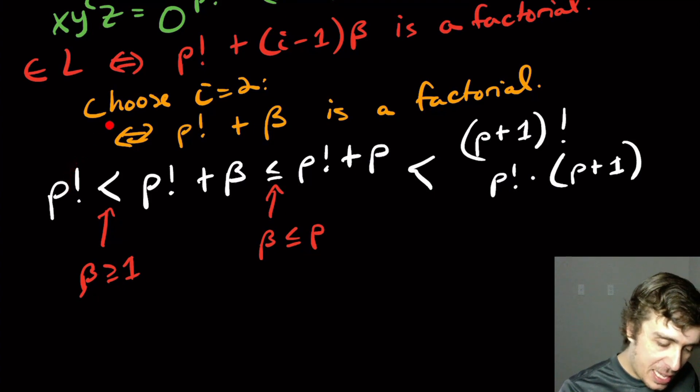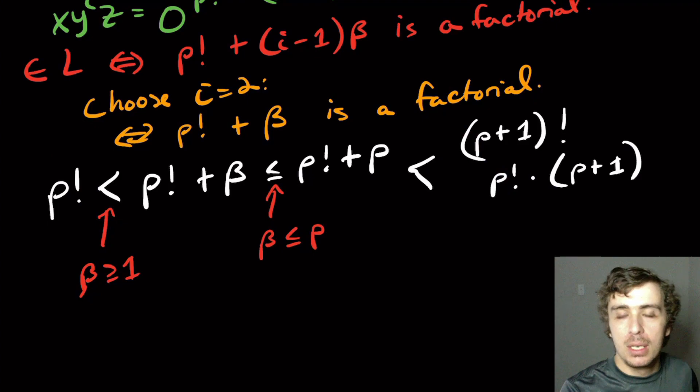So these two are consecutive factorial numbers, and it's strictly in between them. So this length right here cannot possibly be a factorial because it's consecutive between two consecutive factorial numbers, and it's not equal to any one of them.